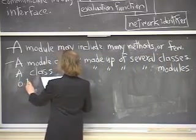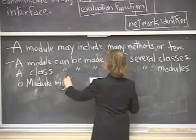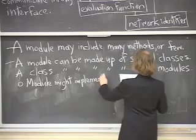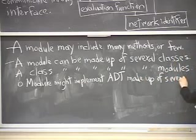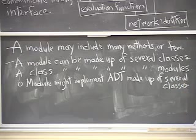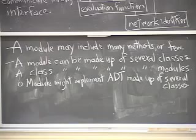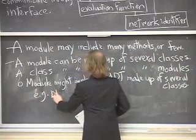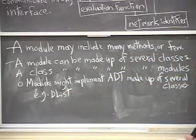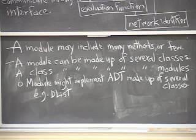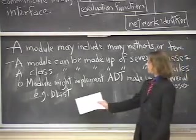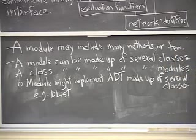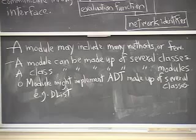So why would a module have several classes? Well, because a module might implement a data structure that needs several classes. So you've been implementing examples of this. Any reasonable list ADT requires at least two classes. You need a list class and a list node class. And I've talked in previous lectures about why it's good to have those separate from each other. So there's an example where one module, one logical module, is made up of two classes, DList and DList node. Or maybe more if you throw in a list super class and a test helper and other classes.